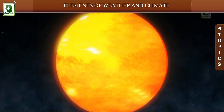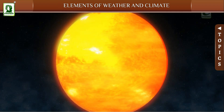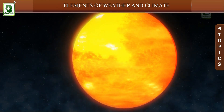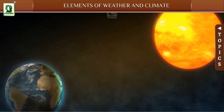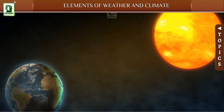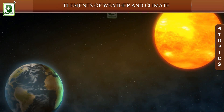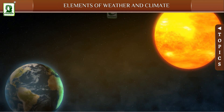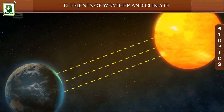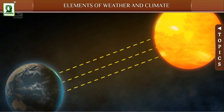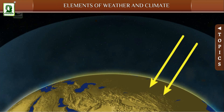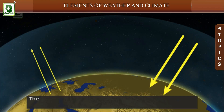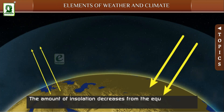The sun is the main source of heat and light on the earth. The distribution of temperature is influenced by insolation, or the incoming solar energy intercepted by the earth. The amount of insolation decreases from the equator towards the poles.